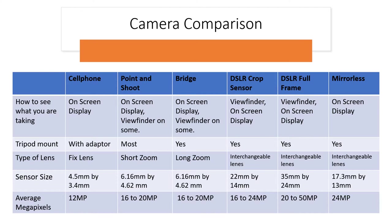The DSLR — crop sensor and full frame — can use both the viewfinder and on-screen display, has tripod mounts and interchangeable lenses. The crop sensor has a smaller sensor and fewer average megapixels than the full frame. On the mirrorless, you basically have on-screen display; some may have a digital viewfinder. They have a tripod mount, interchangeable lenses, a sensor actually smaller than the DSLR, and average megapixels of about 24.